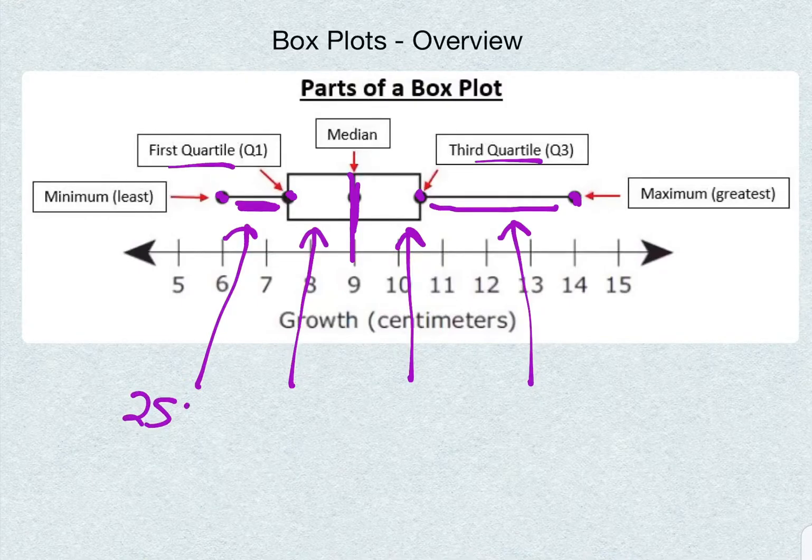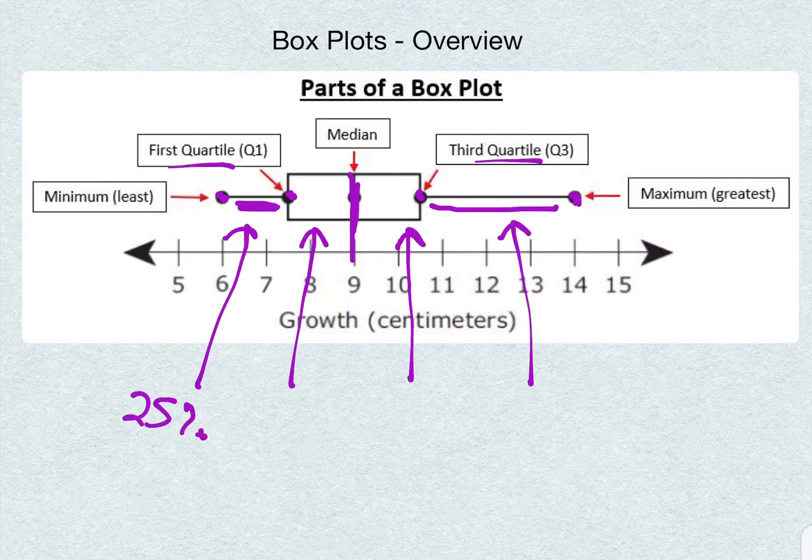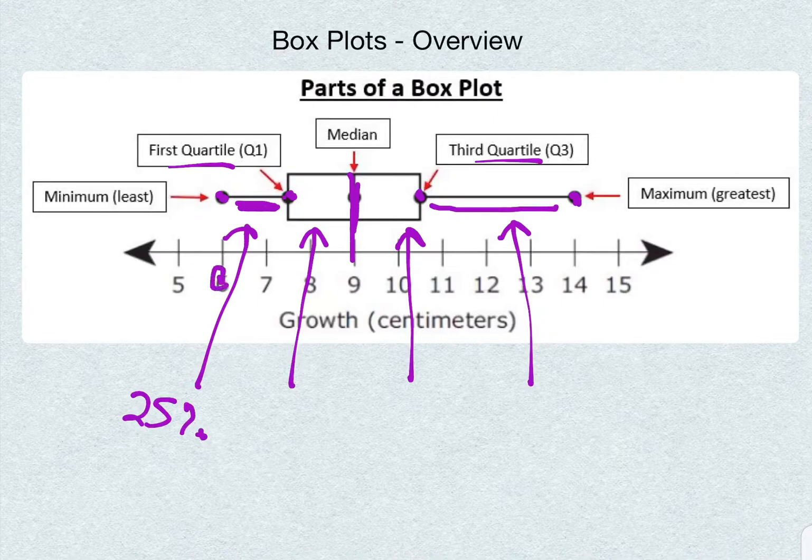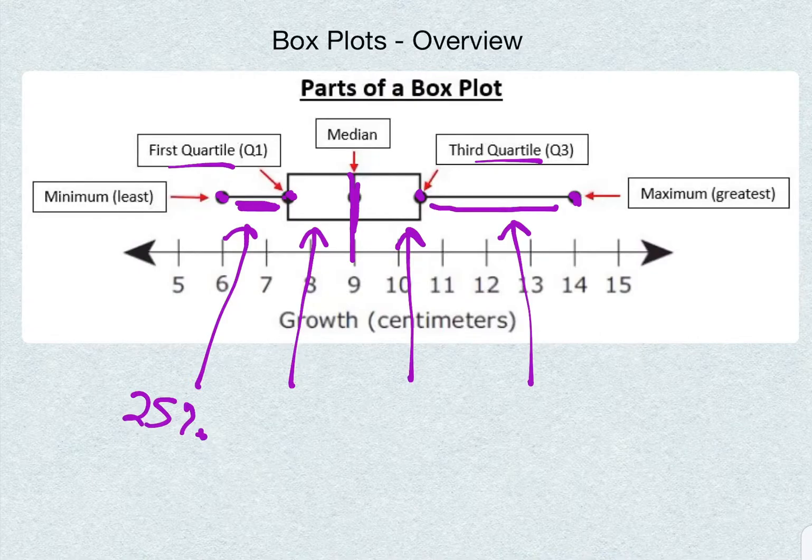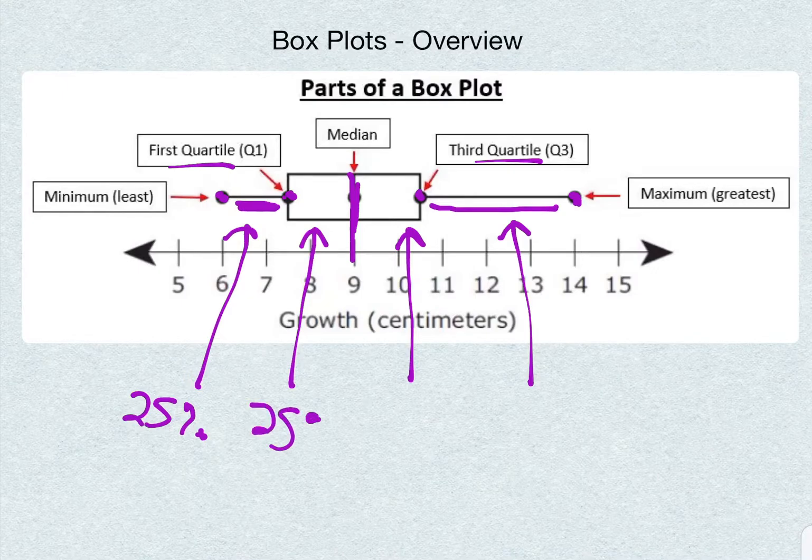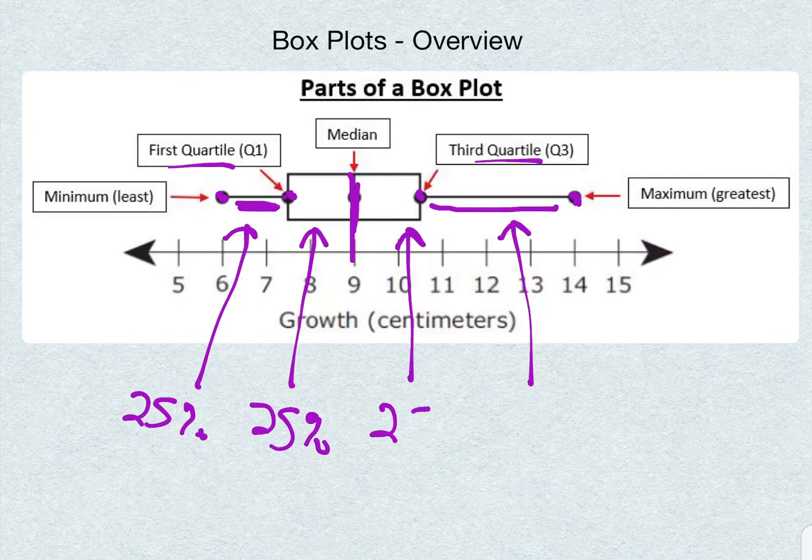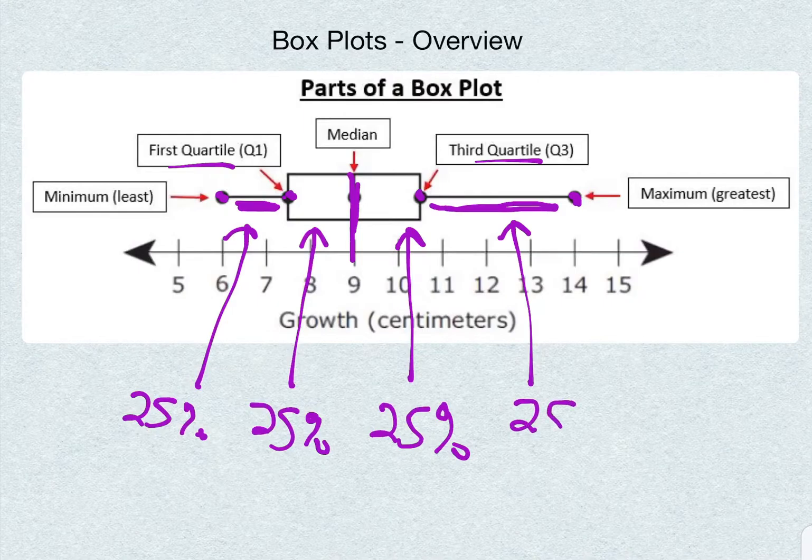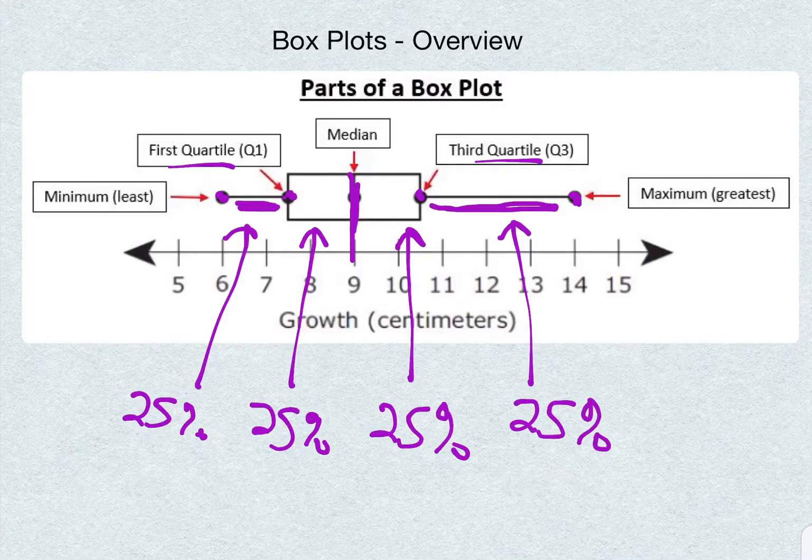So this first whisker is 25% of the data. One fourth of the points in this data set is found between these two points, which is about between six and seven and a half. Now in the left side of our box, that's another 25% of the data. And then on the right whisker over here is our last 25%. So that means a quarter, one fourth of the data is in each of these sections.